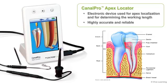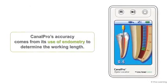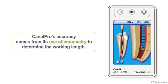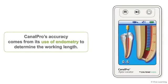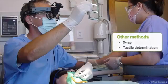CanalPro is highly accurate, providing the reliable, spot-on performance that will make it your go-to unit for apex locating. CanalPro's accuracy comes from its use of endometry to determine the working length. Other methods that can be used to determine the working length are x-ray and tactile determination.